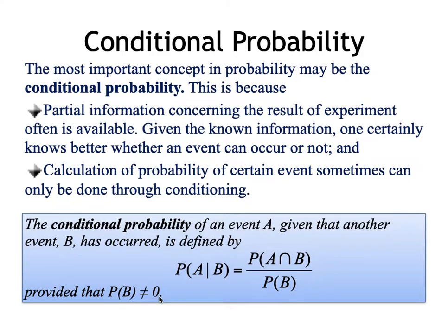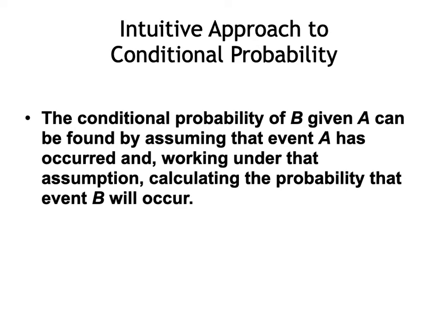We have to make sure that this event is not an impossible event so that its probability will not be equal to zero. The intuitive approach to conditional probability, or by common sense: the conditional probability of B given A means A already occurred. What are the chances that B is going to occur? It can be found by assuming A already happened, and working on that assumption, we calculate the probability that event B is going to occur.